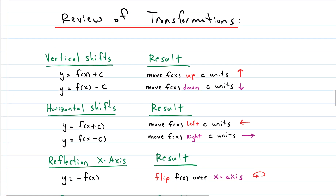Let's talk about the transformations. We'll start with one of those seven graphs and transform it. For vertical shifts — moving up or down — you add or subtract a constant outside the function. If C is five, you go up five units. If you have negative five for your C, you go down five units.